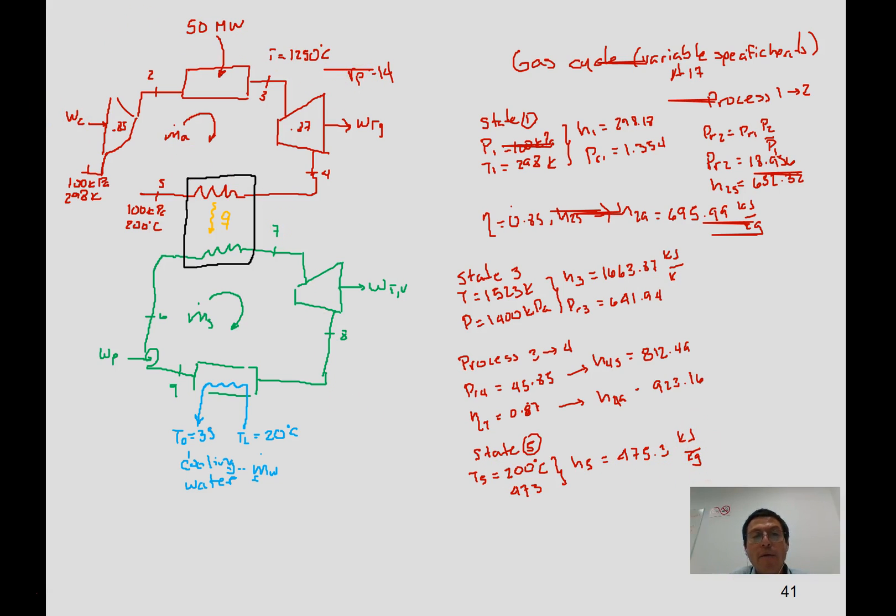Finally, we will need to find out state 5. Now we notice that we have the amount of heat that we are providing. So from there we can get the mass flow rate, which is equal to 50 megawatts, which is the same as mass flow rate of air times the enthalpy difference, so it's h3 minus h2a. This comes from our first law of thermodynamics.